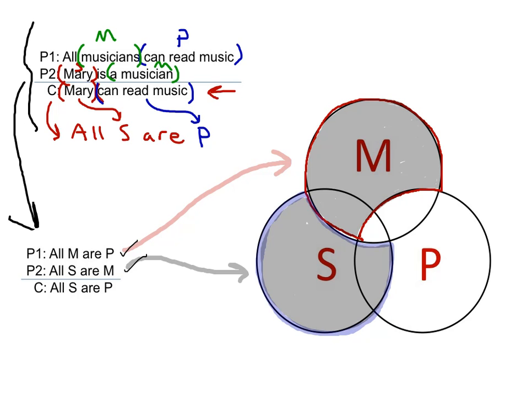The argument says that in order for an argument to be valid, if the premises are true, it's impossible for the conclusion to be false. And that's in fact what we see. This is a valid argument, because after we diagram the premises that's true here, it's impossible for S to be anything other than a P.